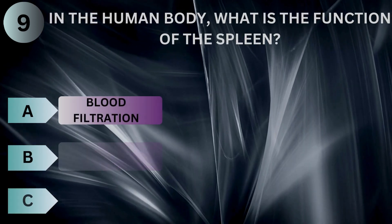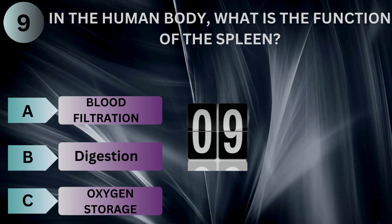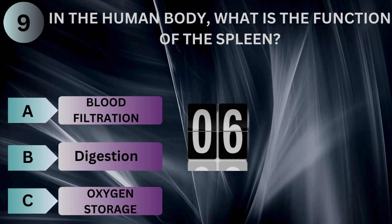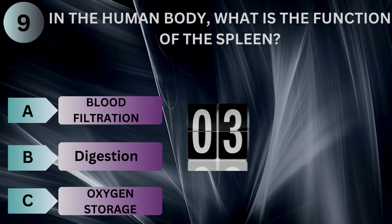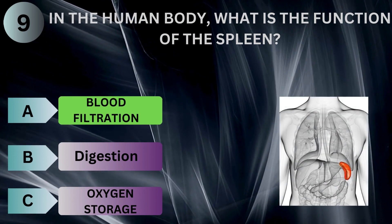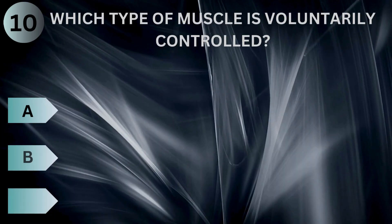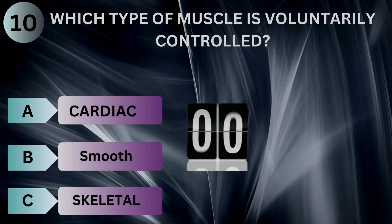In the human body, what is the function of the spleen? Which type of muscle is voluntarily controlled?